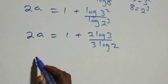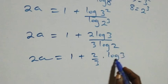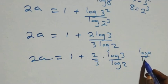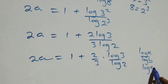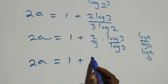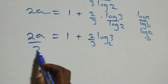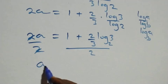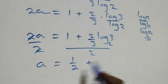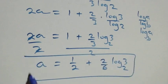This can also be written as 2a equals 1 plus (2/3) times (log 3 over log 2). Applying the change of base formula, when we have log a over log b we can write it as log a to base b, so what we have becomes 2a equals 1 plus (2/3) times log₂3. Dividing both sides by 2, we have a equals 1/2 plus (2/6) log₂3, which becomes 1/2 plus (1/3) log₂3.